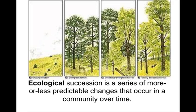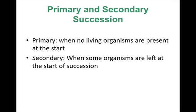Ecological succession is a series of more or less predictable changes that occur in a community over time. There are two main types of succession. The primary is when there are no living organisms present at the beginning. Typical examples of this would include volcanic eruptions that will completely cover an area with lava, and glacial receding. A glacier will recede over time, melting, and what is left behind it is simply rock and dirt. There are no living organisms left there.